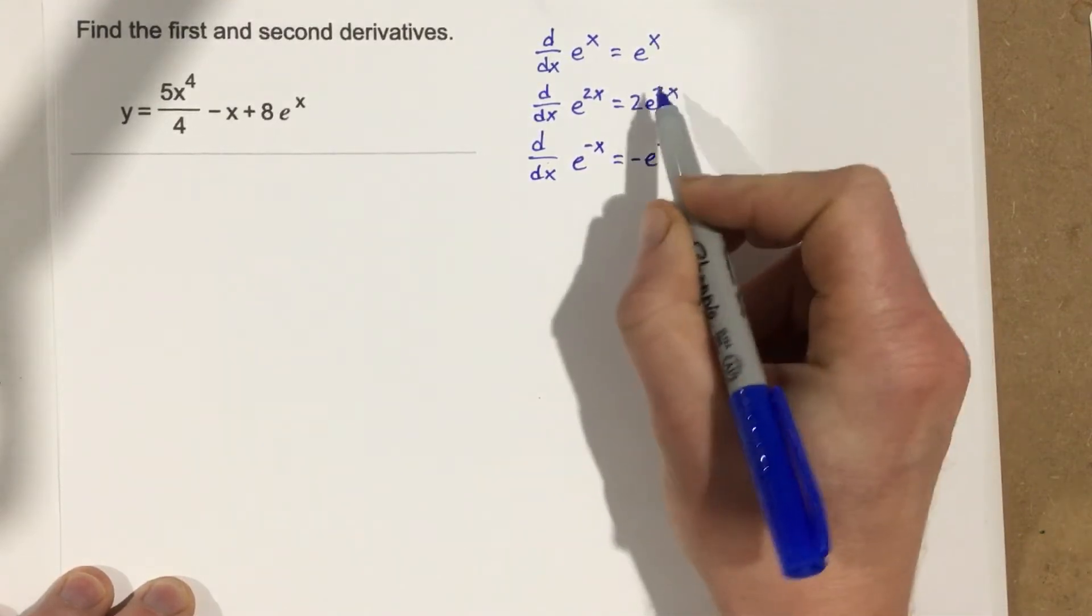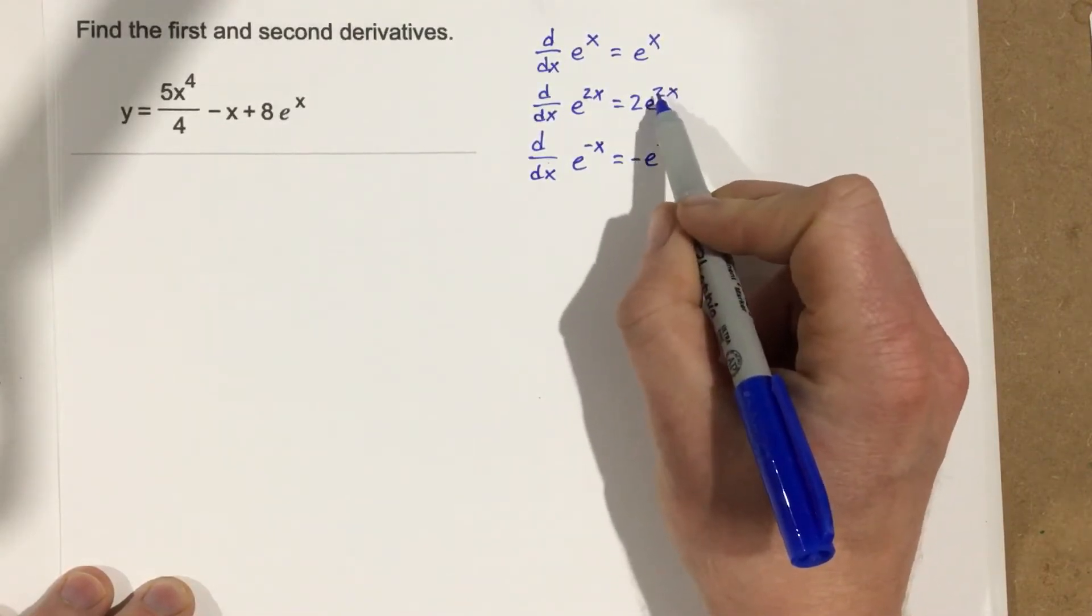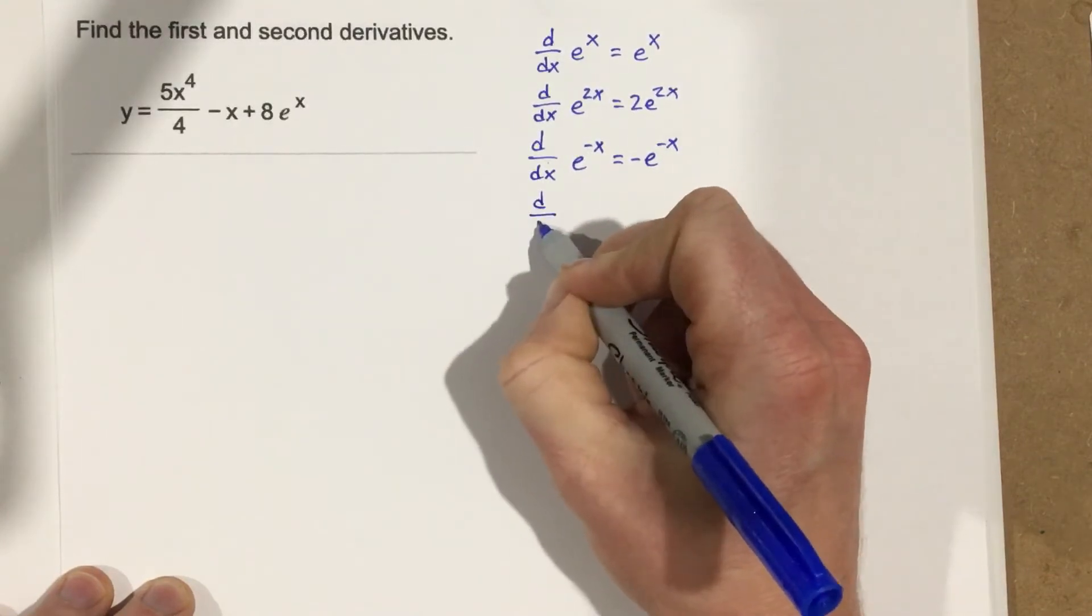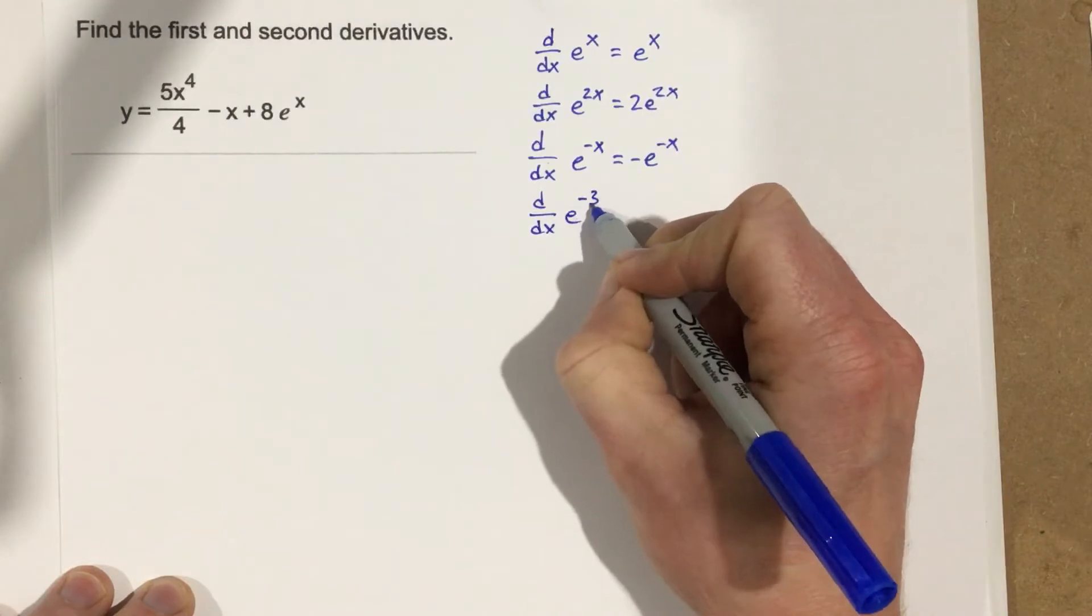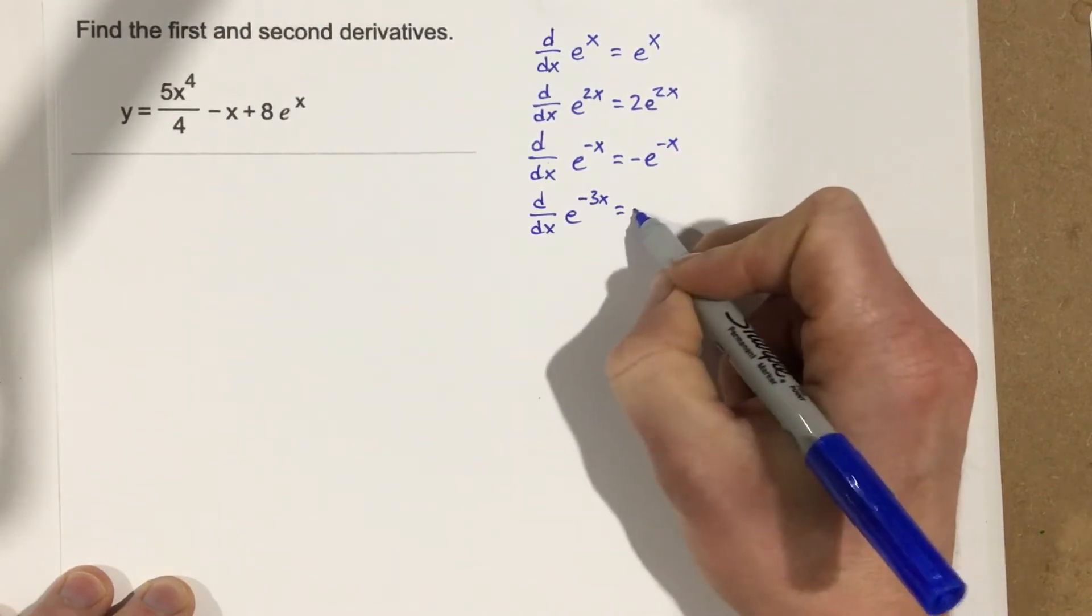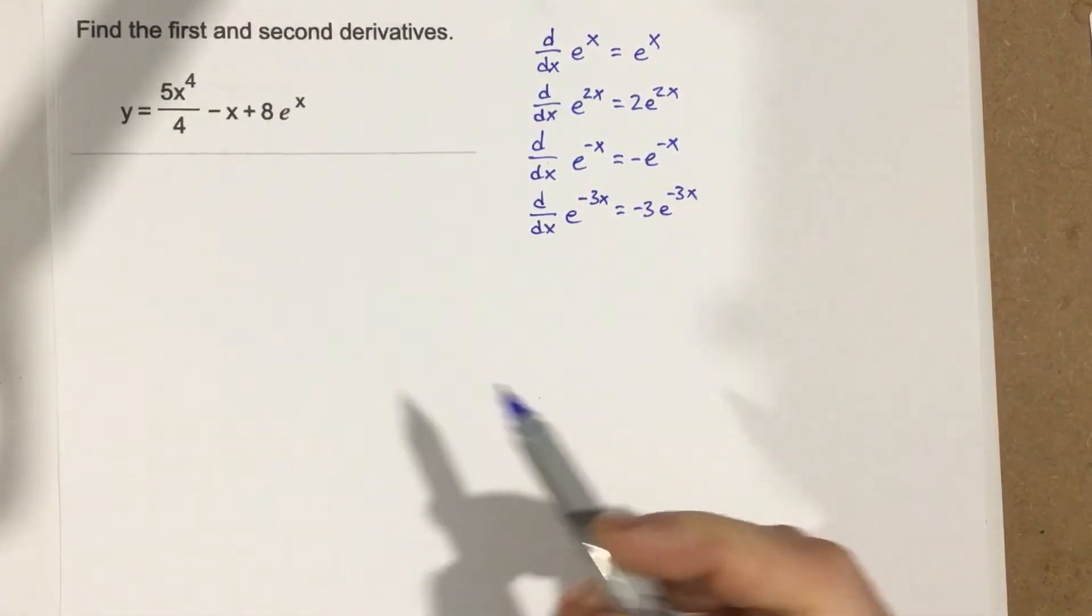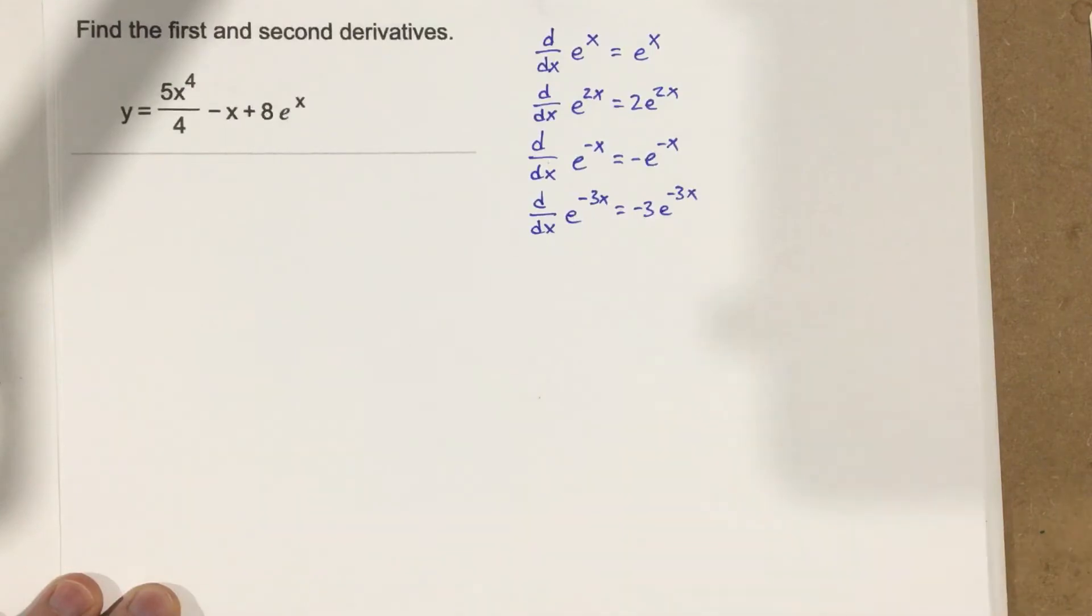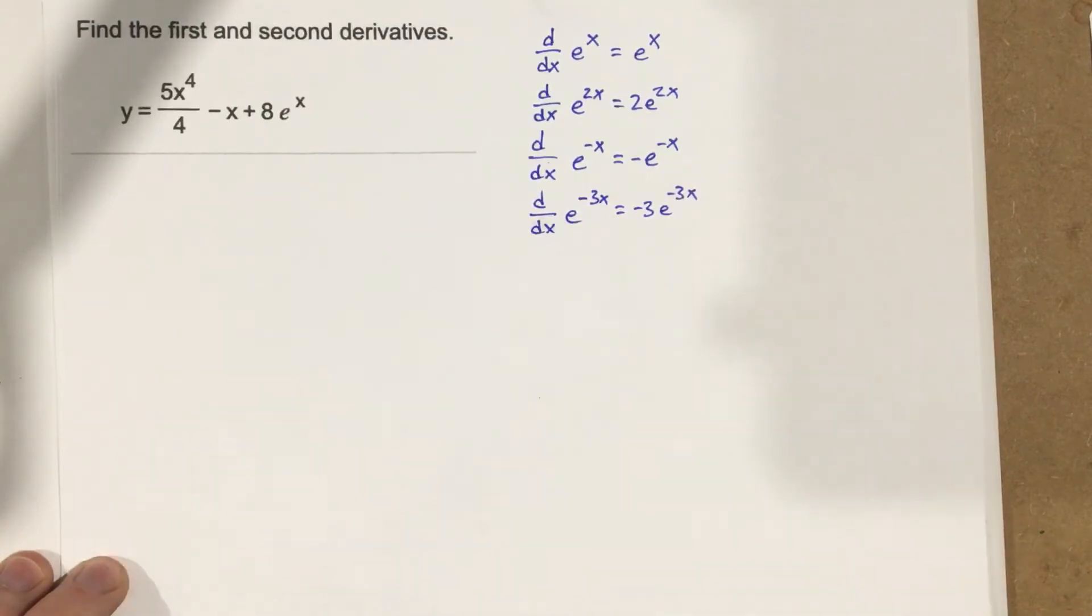You should be able to see the pattern now that we're bringing the coefficient of the top function to the front on each of these. So we do derivative of e to the negative 3x. This is going to be negative 3e to the negative 3x. So finding the derivative of this exponential is pretty easy for the base e.